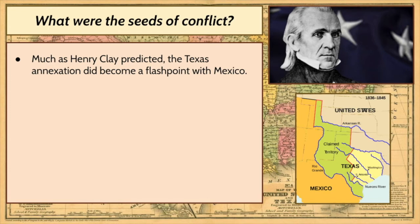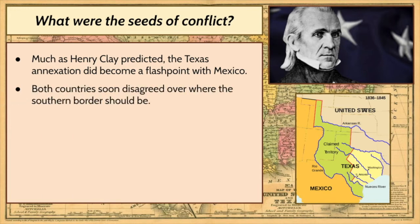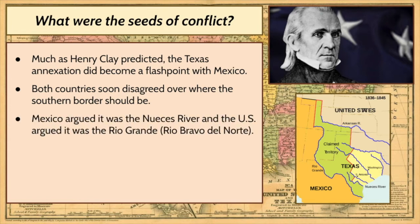Henry Clay basically said if we annex Texas, we will have more war with Mexico. So James K. Polk, the winner in that election, did not care. He made promises in the 1844 election — it is often said that he is the first president to ever keep all of his campaign promises. He promised that he would gain Texas all the way to the Rio Grande, gain Oregon, gain New Mexico, and gain California for the United States.